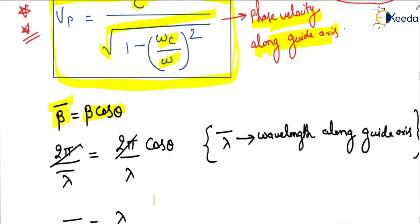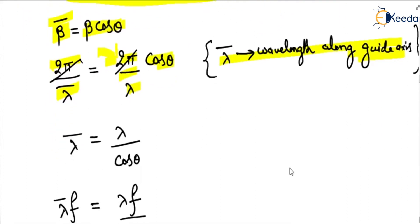We also know that beta bar equals beta times cos θ. Beta bar is 2π/λ̄, and beta is 2π/λ times cos θ. So λ̄ is the wavelength along the guide axis, and λ̄ equals λ divided by cos θ.